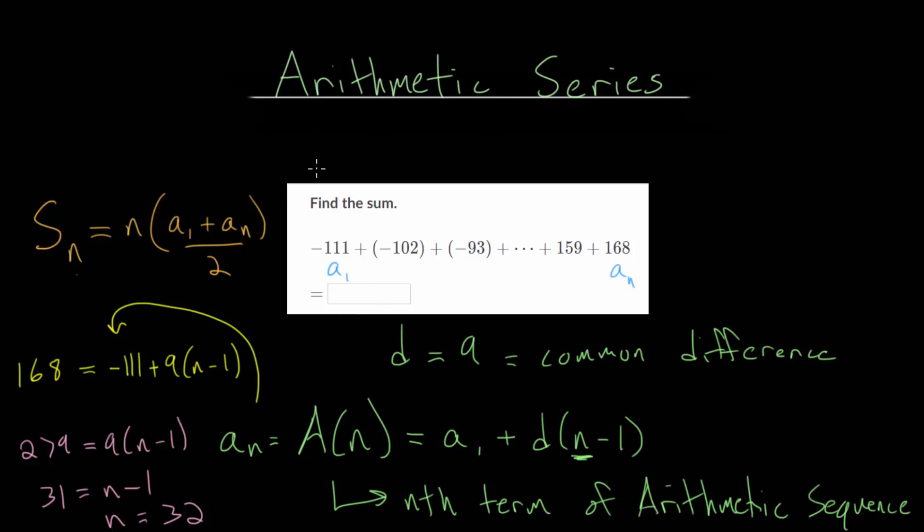So now with all this in mind, let's plug in what we know to our formula to find the sum. The sum of these 32 numbers is equal to the amount of terms we have, which is 32, multiplied by the first term, minus 111, plus the last term, 168, and we'll divide everything by 2. We're just taking the average of that first and that last term. And plugging everything into a calculator, our final sum here is 912.